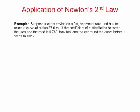Suppose a car is driving on a flat horizontal road and has to round a curve of radius 37 meters. If the coefficient of static friction between the tires and the road is 0.78, how fast can the car round the curve before it starts to skid?